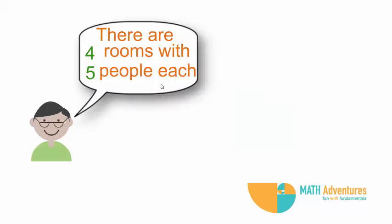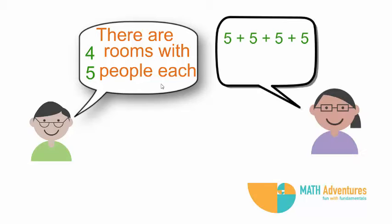For example, there are 4 rooms with 5 people each. So, in total, there are 5 plus 5 plus 5 plus 5, or 5 into 4 people.